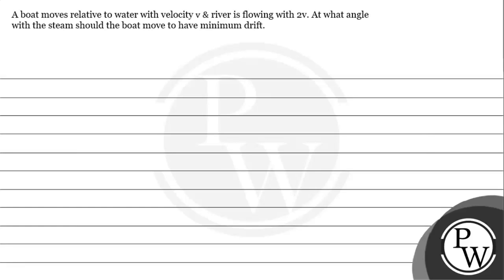Hello, let's read the given question. The question says: a boat moves relative to water with velocity v, and the river is flowing with 2v. At what angle with the stream should the boat move to have minimum drift?